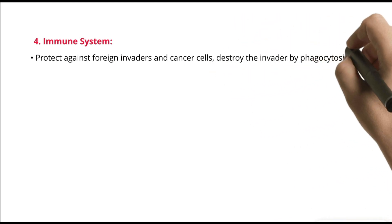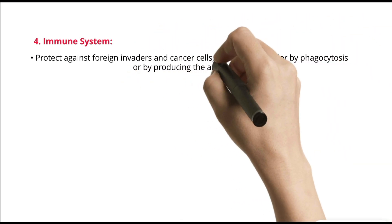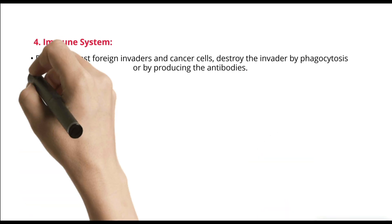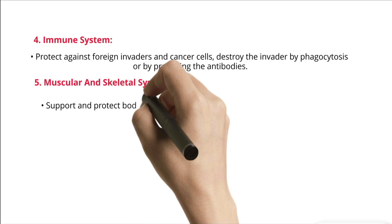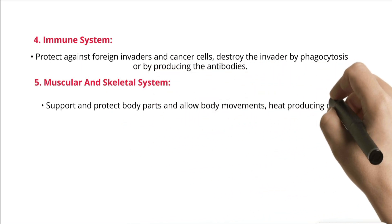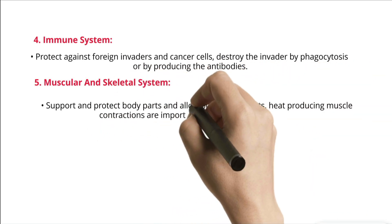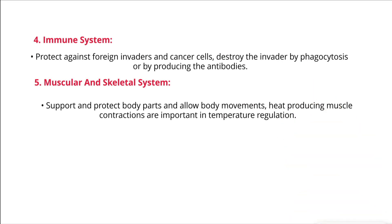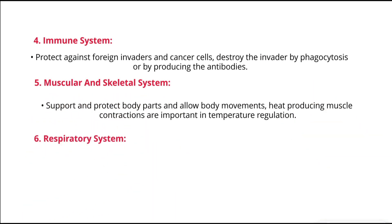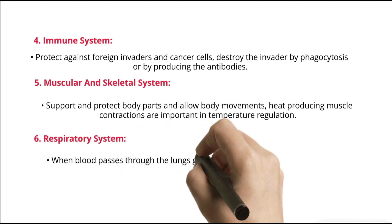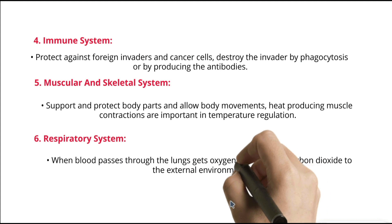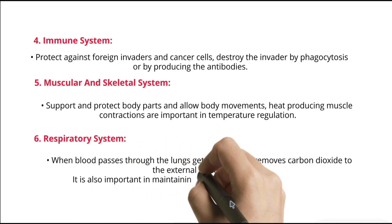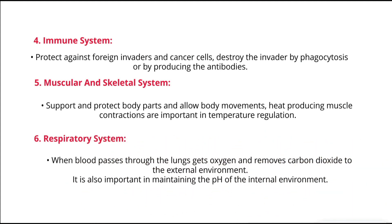4. Immune system — protects against foreign invaders and cancer cells, destroying the invader by phagocytosis or by producing antibodies. 5. Muscular and skeletal system — supports and protects body parts and allows body movements. Heat-producing muscle contractions are important in temperature regulation. 6. Respiratory system — when blood passes through the lungs, it gets oxygen and removes carbon dioxide to the external environment. It is also important in maintaining the pH of the internal environment.